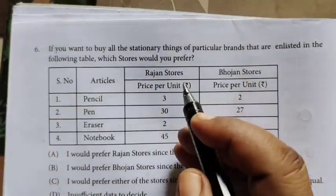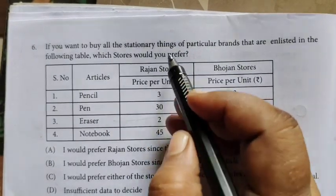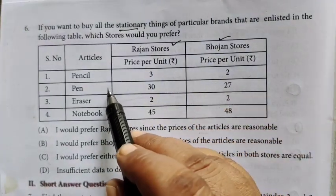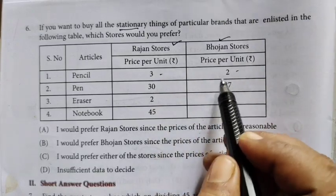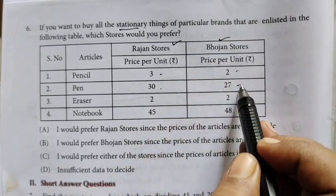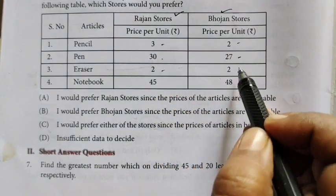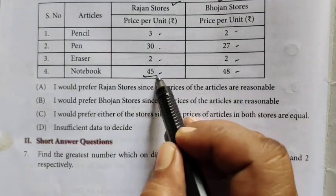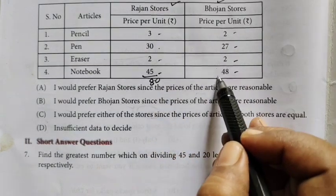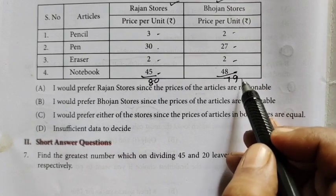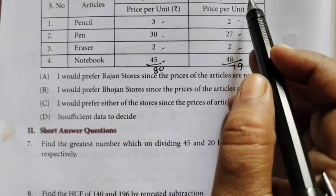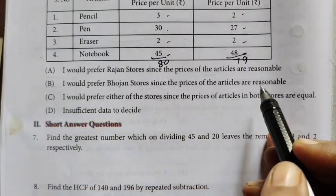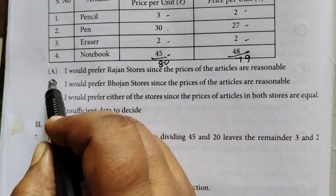Question number 6. If you want to buy all the stationery things, there are two stores. The first store has pen $30, eraser equal price, notebook $45. The second store has pen $31, notebook $48. If you want to buy all the stores, you can select the store. The option is I would prefer the store since the prices of the articles are reasonable, so option B is the correct one.